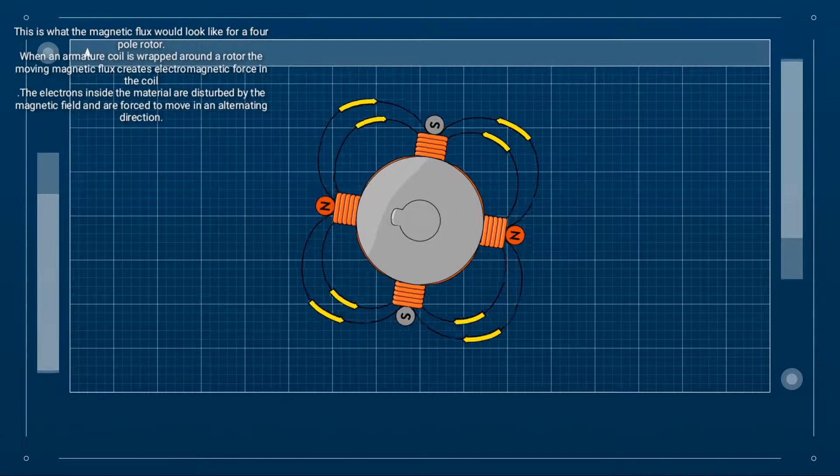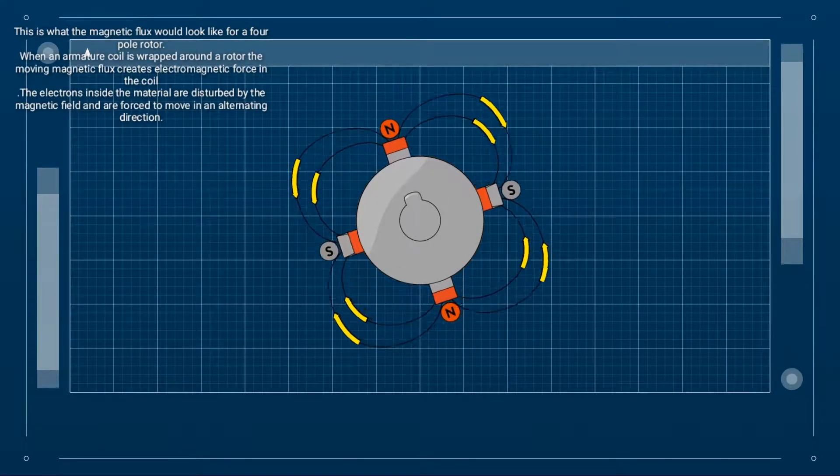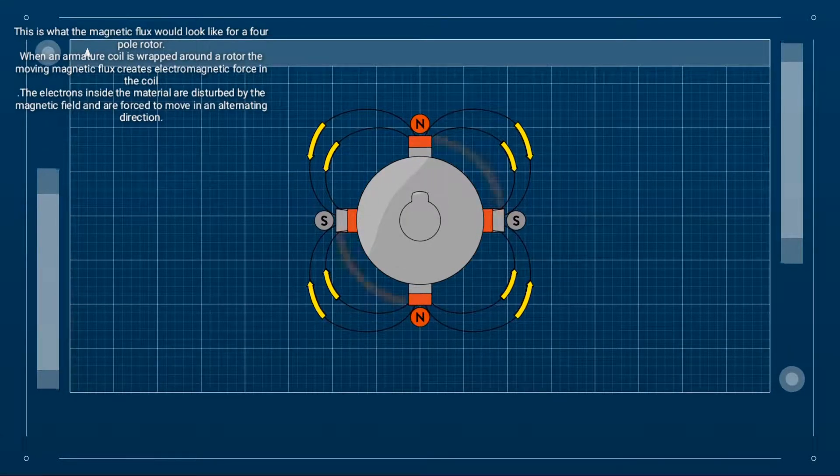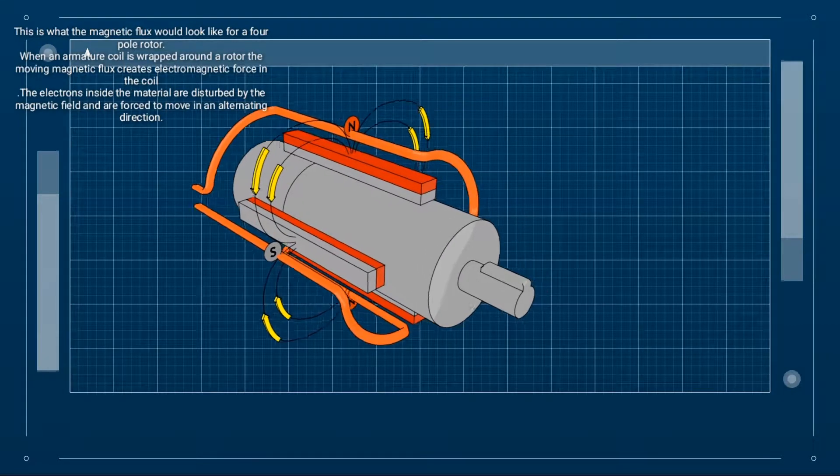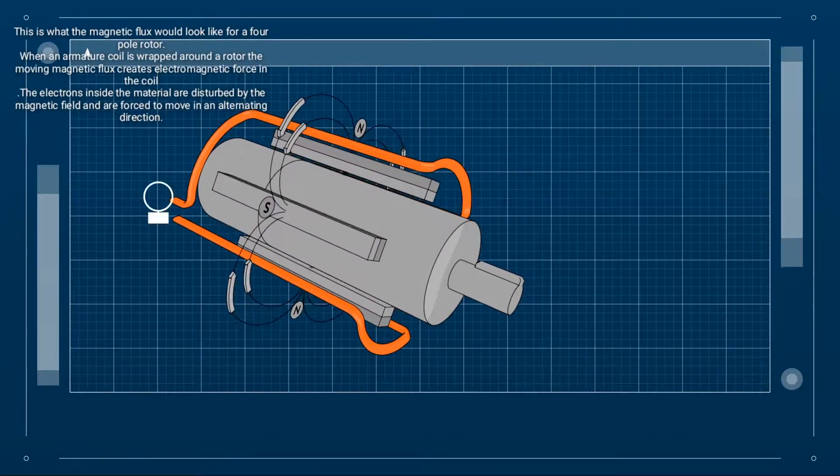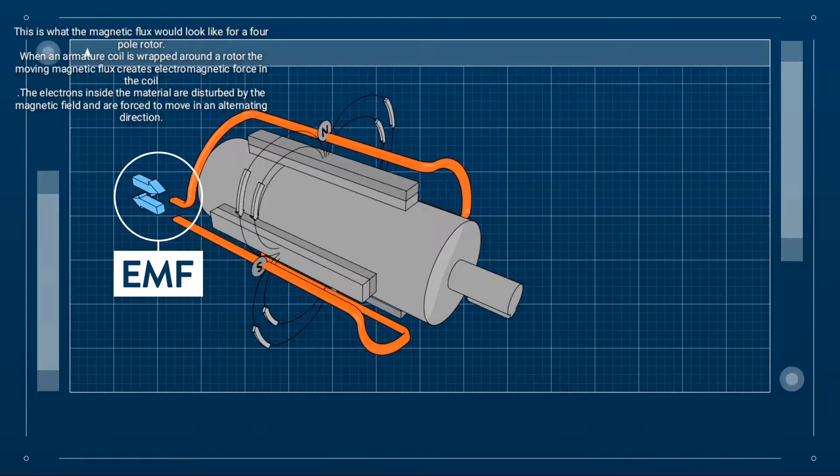This is what the magnetic flux would look like for a four pole rotor. When an armature coil is wrapped around the rotor, the moving magnetic flux creates an alternating electromagnetic force in the coil.